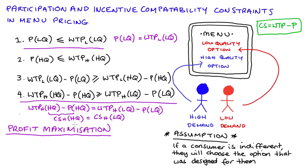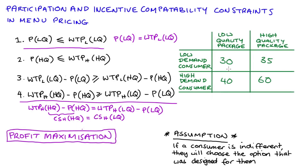So for profit maximization, we set the first condition to be an equality: the price of the low quality bundle equals the willingness to pay of the low demand consumer for that bundle. And the fourth condition will also be an equality, meaning the consumer surplus of the high demand consumer for the high quality option equals the consumer surplus for the low quality option. To demonstrate, I have a table here showing the willingness to pay for the low demand consumer and the high demand consumer across the two options. For the first equality, we set the price of the low quality option equal to the willingness to pay of the low demand consumer for that option, which is 30.